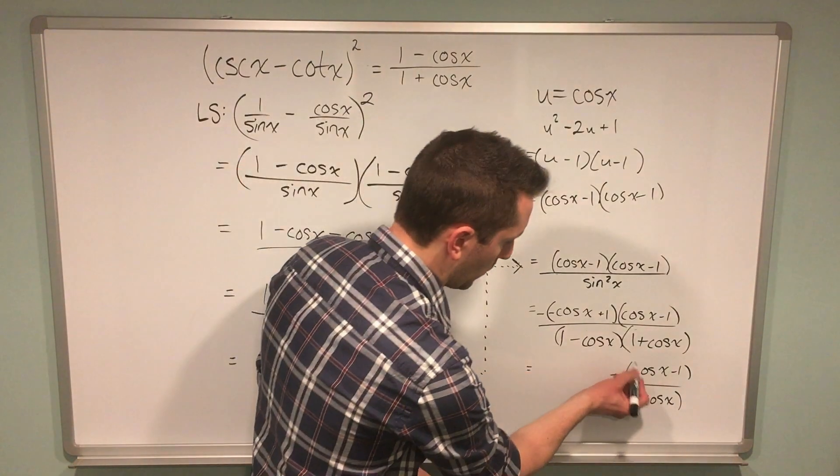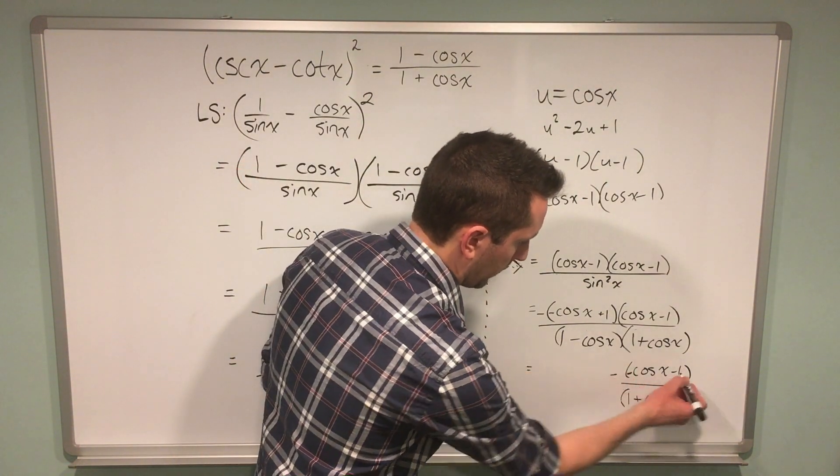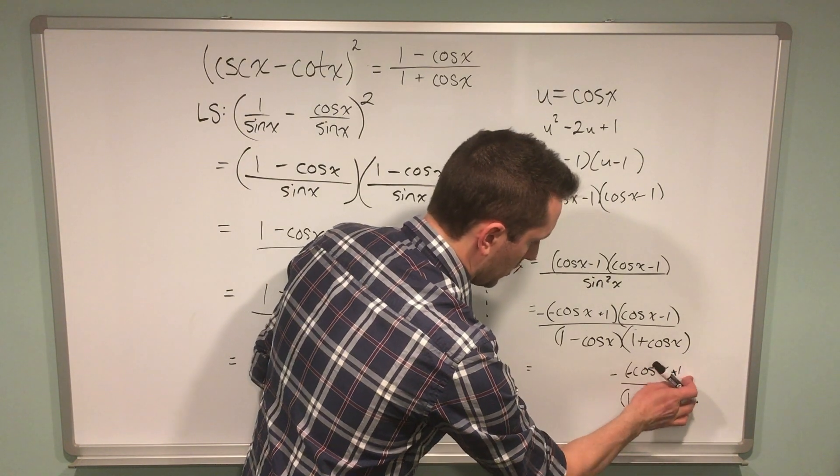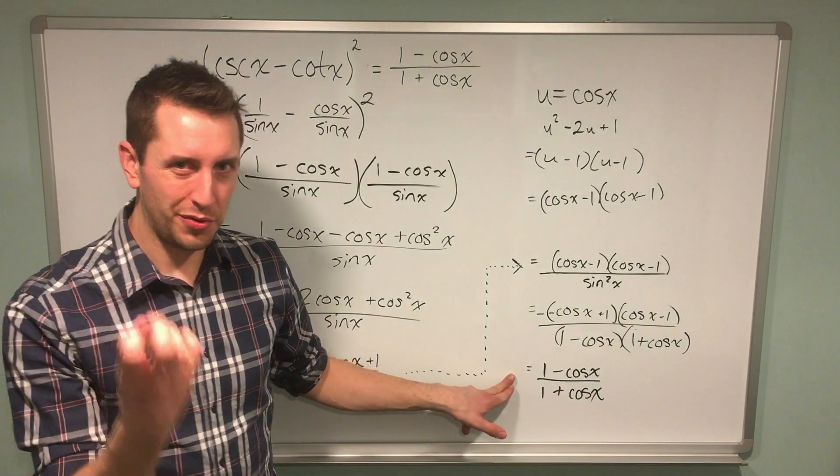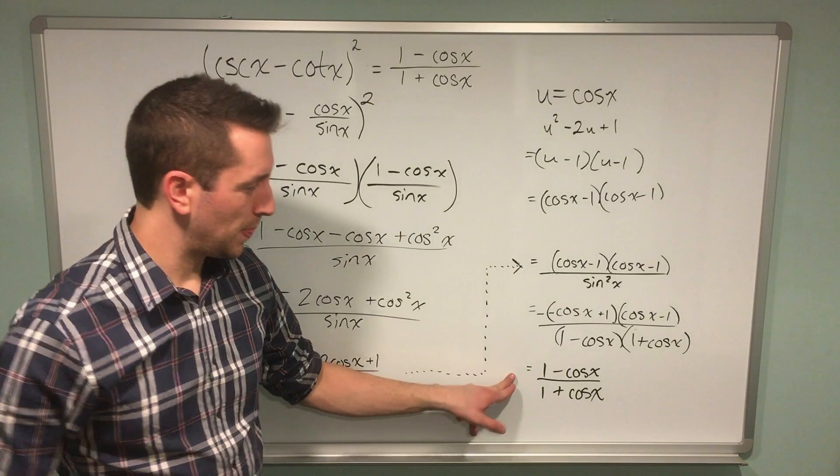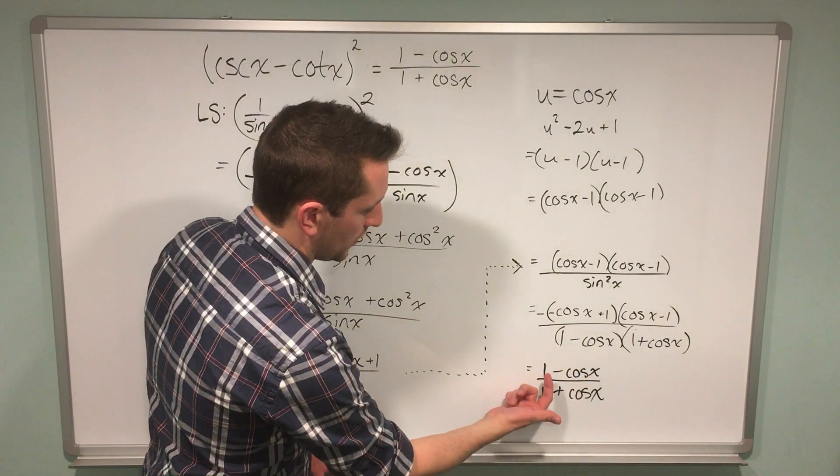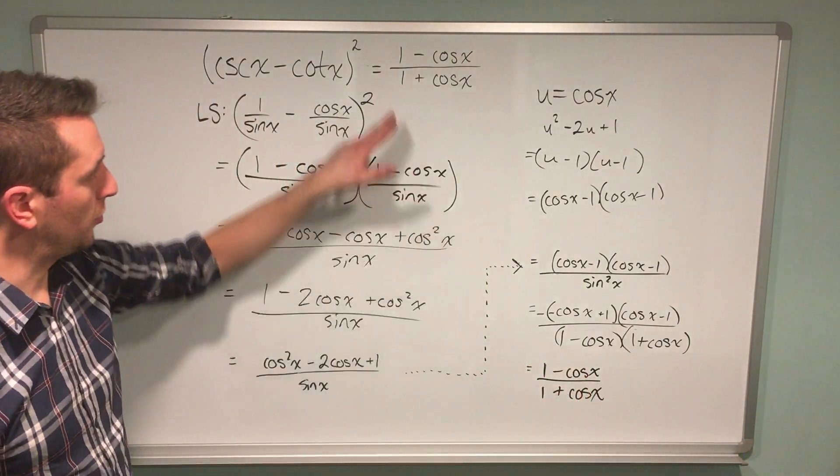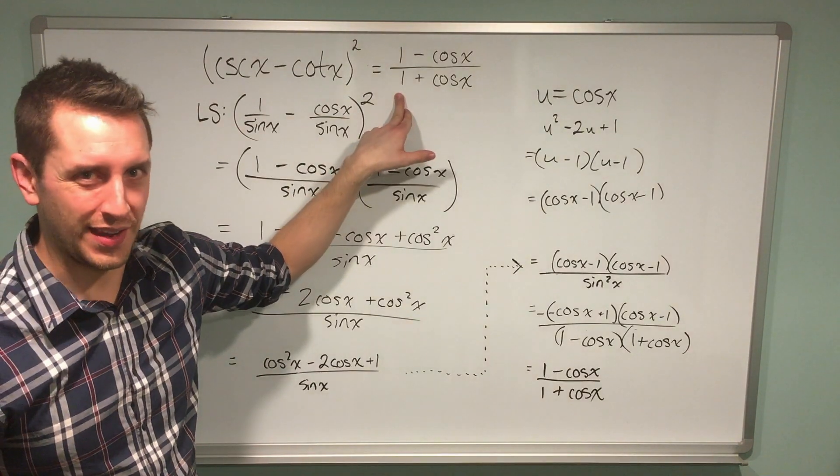If I distribute this negative into the brackets, I end up with negative cos x plus 1 in the numerator. At this point we reach the most satisfying part of this trig identity problem. I can switch the two terms in the numerator to end up with 1 minus cos x over 1 plus cos x, which is the same as the right-hand side.